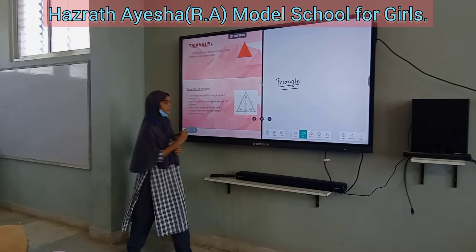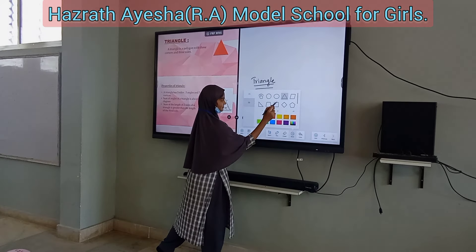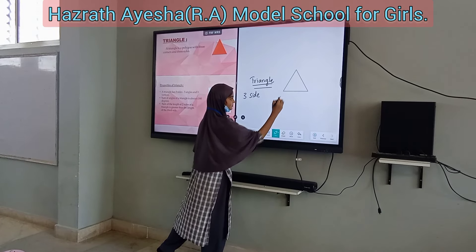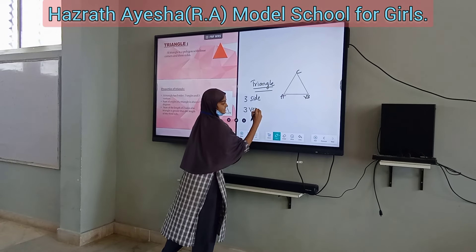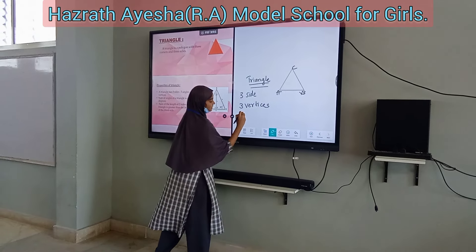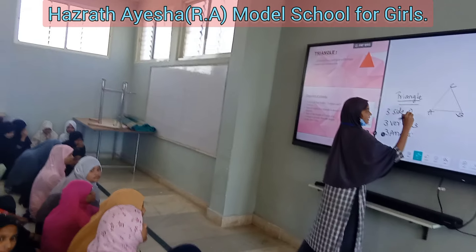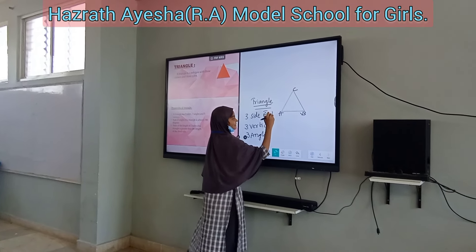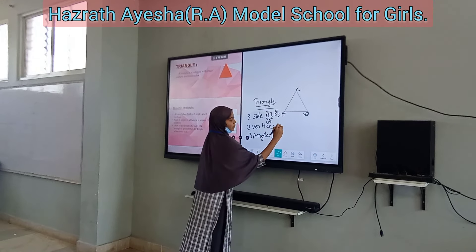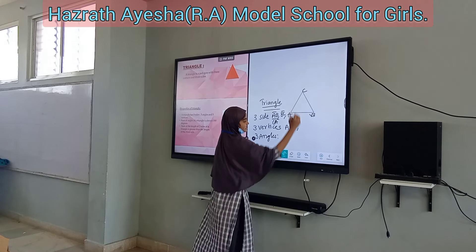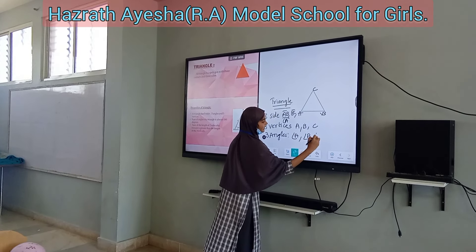Let's see the properties of triangle. A triangle has three sides, three vertices, and three angles. Here, the sides are line segment AB, line segment BC, and line segment CA. The vertices are point A, point B, and point C. And the angles are angle A, angle B, and angle C.